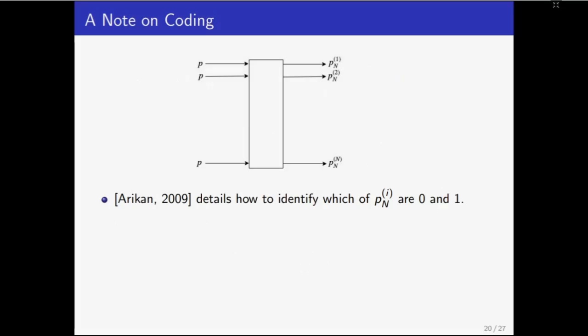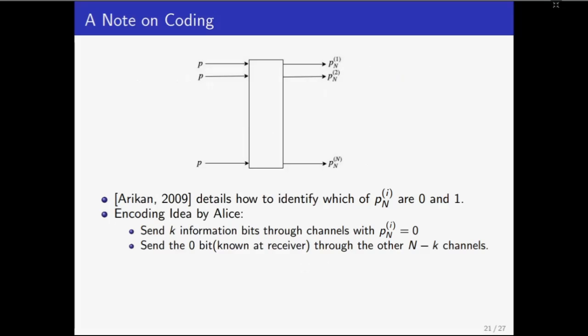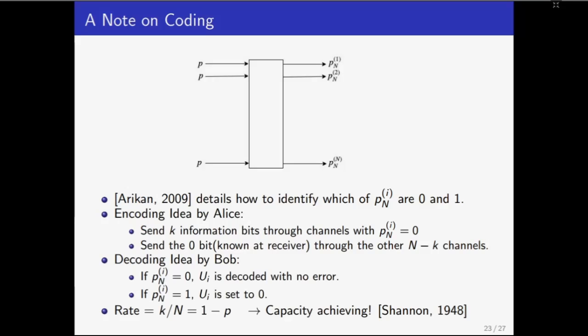Assuming that it is done, what do Alice and Bob do now? Alice simply sends her k information bits through the k channels which are completely noiseless. In all the other channels, she sends a fixed bit 0 which is known by Bob beforehand. Now Bob goes through the channels one by one. If the channel is completely noiseless, he can recover the bit correctly with probability 1. If the channel is completely noisy, then he already knows that the corresponding bit is 0. Since there are n times 1 minus p noiseless channels, k can be made as large as n times 1 minus p.